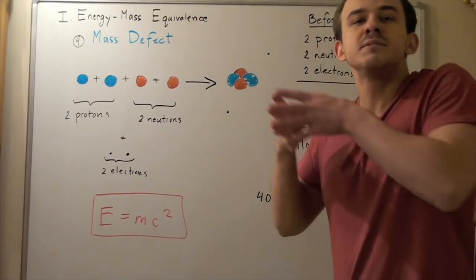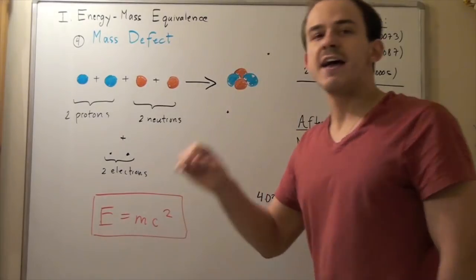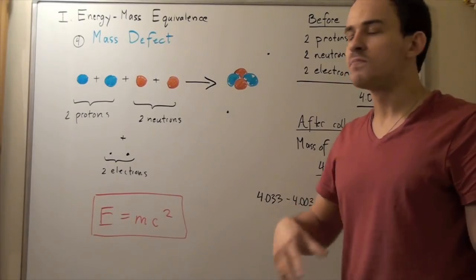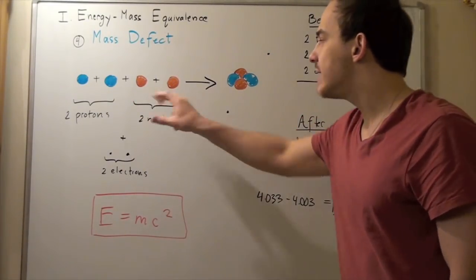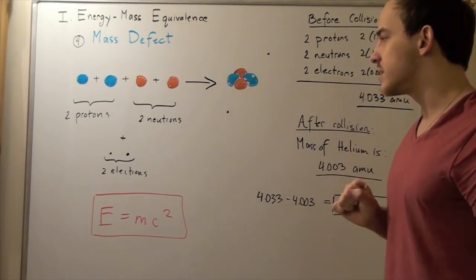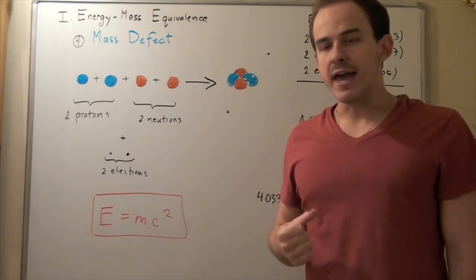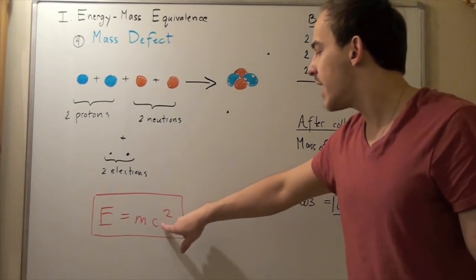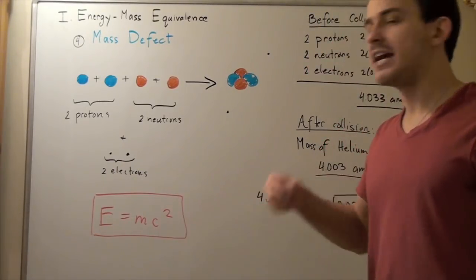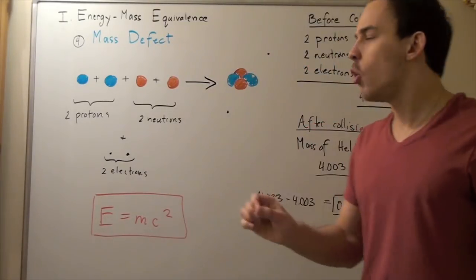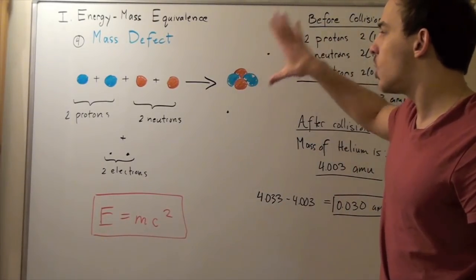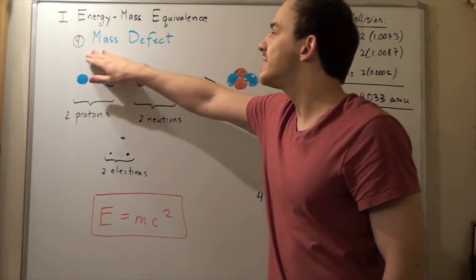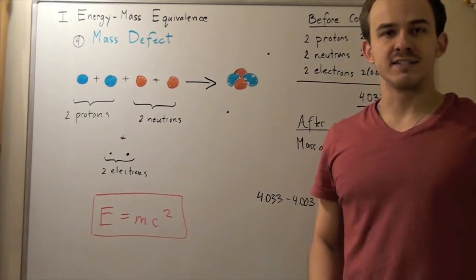This mass becomes energy according to this equation. And this energy is the energy that holds the nucleons together. It's the energy that holds the two protons and two neutrons together in the nucleus. And if you want to find what this amount of energy is, we simply plug this into the mass and then multiply by the speed of light squared. And we'll find the energy that holds our atom together, the energy that holds our nucleons in the nucleus together. And this energy is known as the binding energy or the mass defect energy.